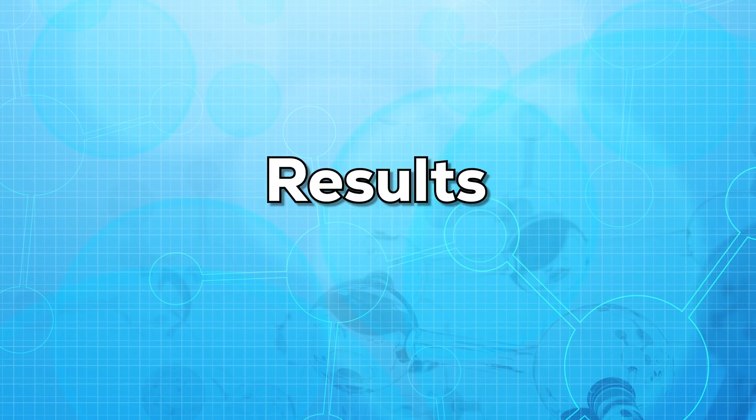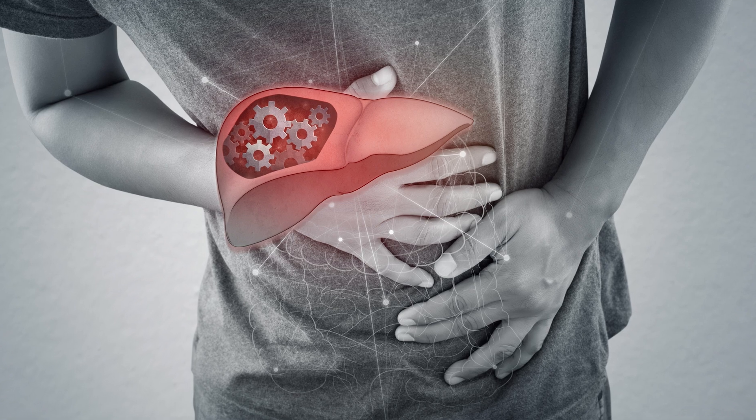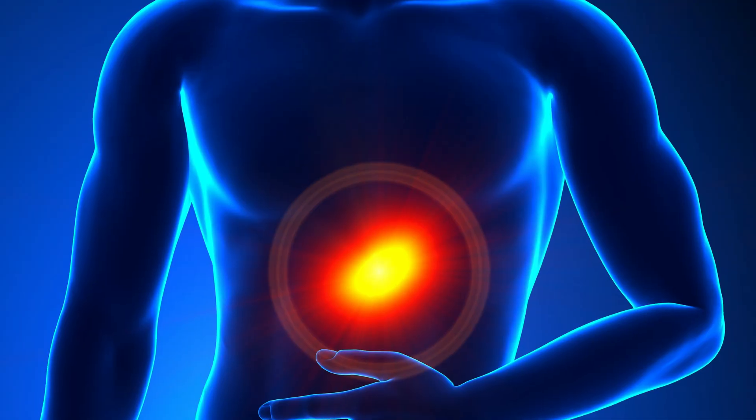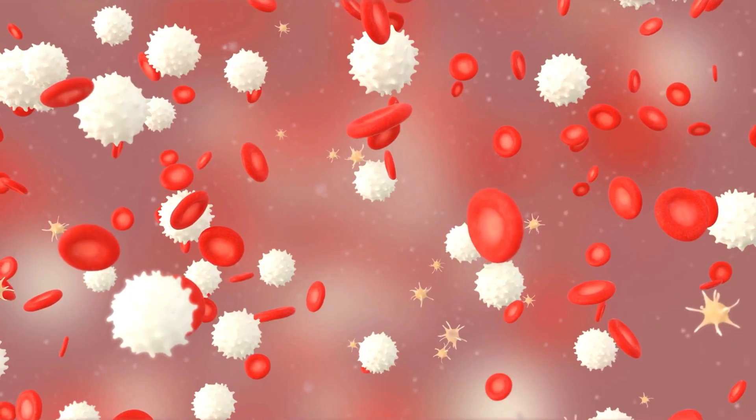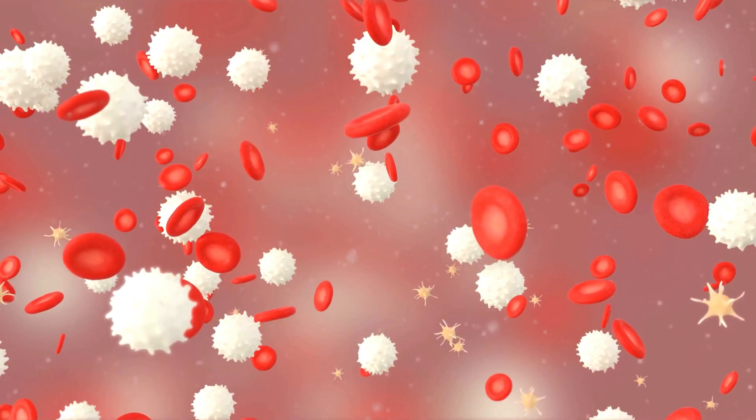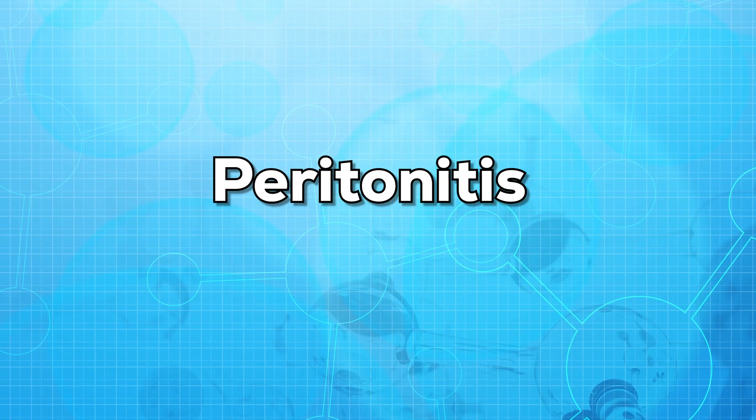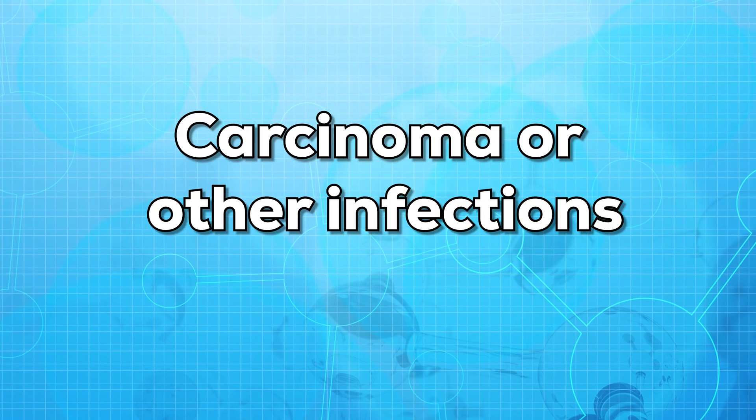Now let us talk about the results — what do the results mean? If your fluid is bile-stained, it may mean that you have a liver or gallbladder disease. If the fluid is bloody in nature, it may mean that there was a tumor or an injury. If the fluid has high numbers of WBCs, it may indicate peritonitis. And if the fluid is milky in color, it may mean carcinoma or other infections.